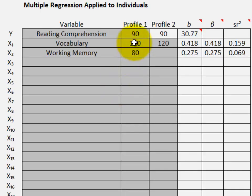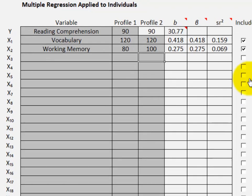Now what if we want to contrast this profile, 120 and 80, with another profile? So if a person scored 100 on working memory, no weakness at all, how do predictions change?